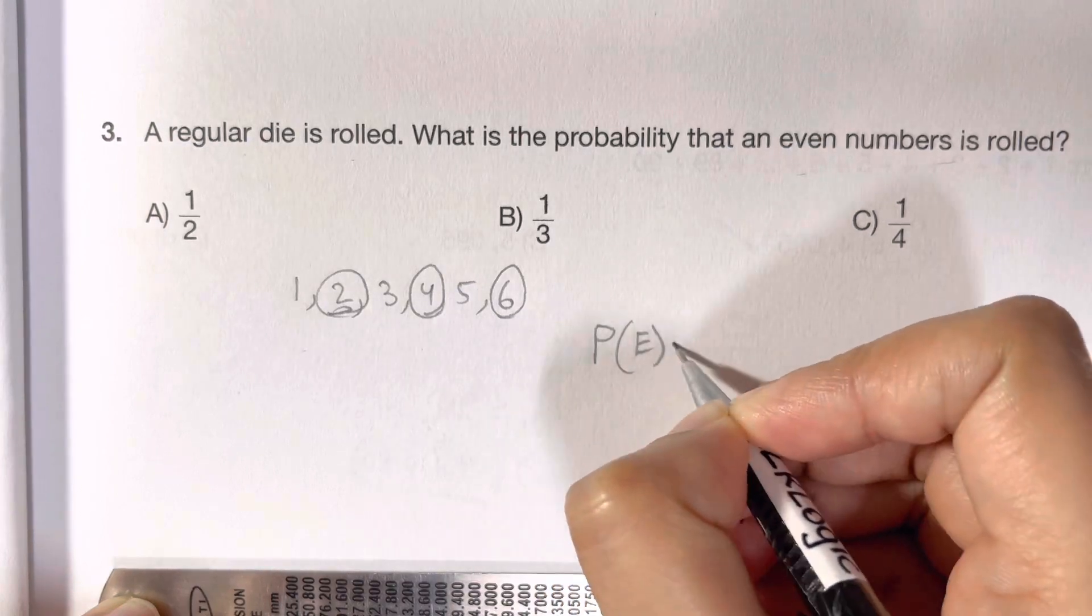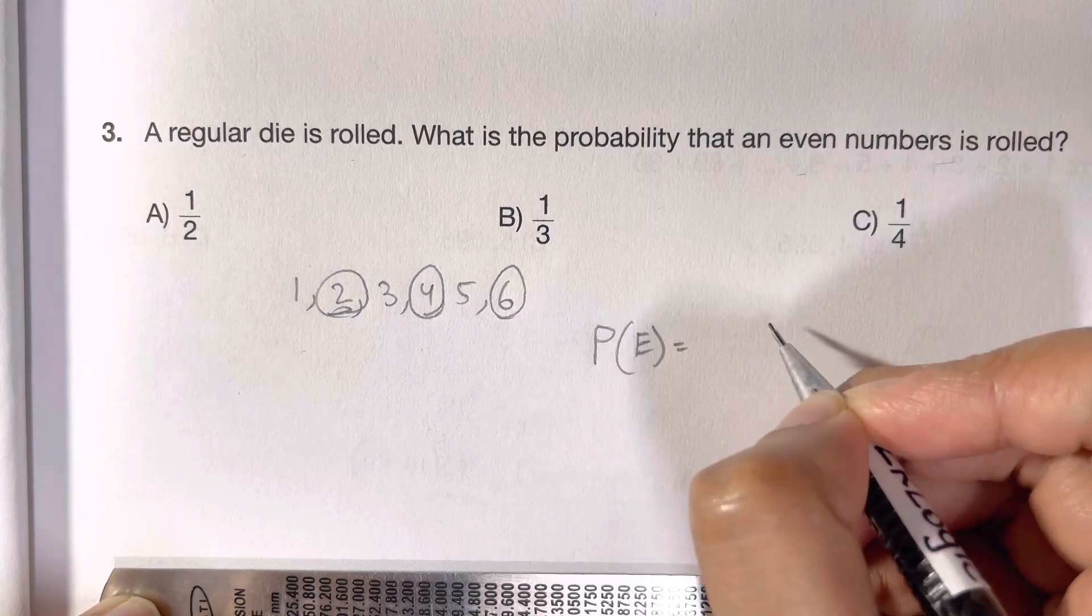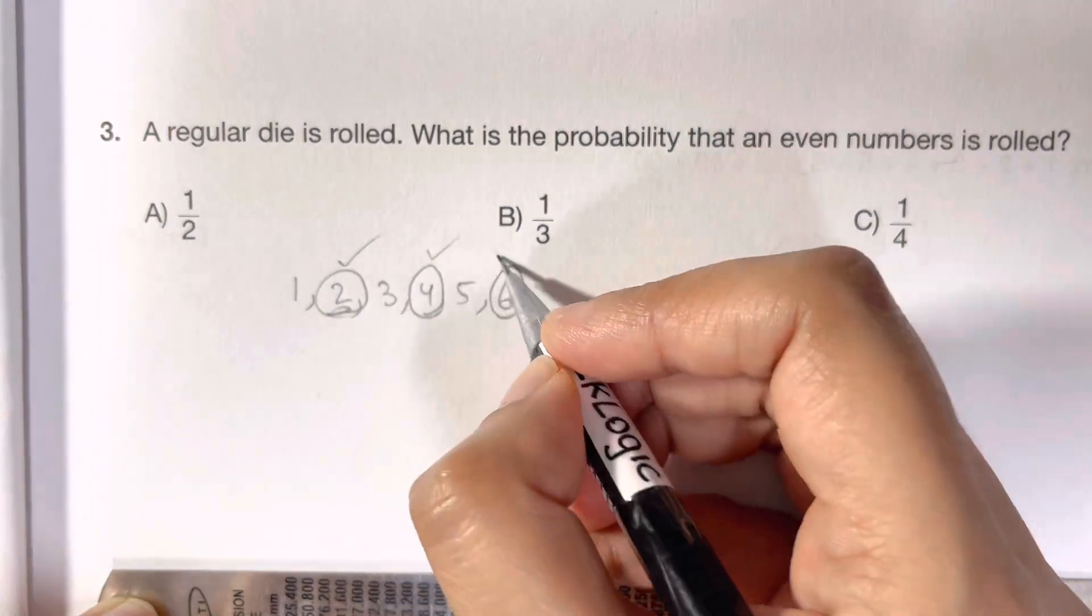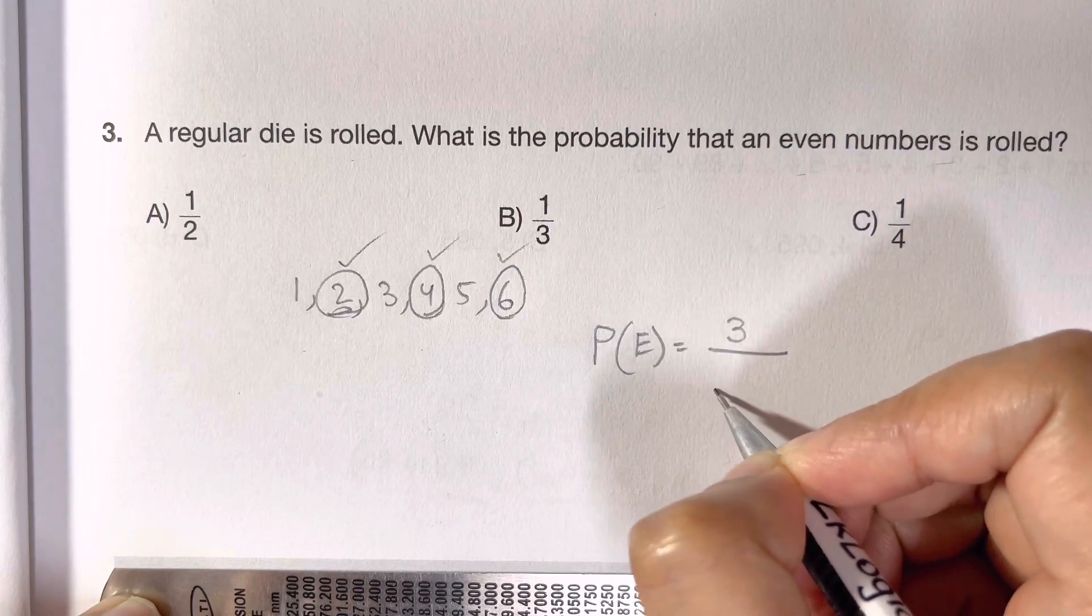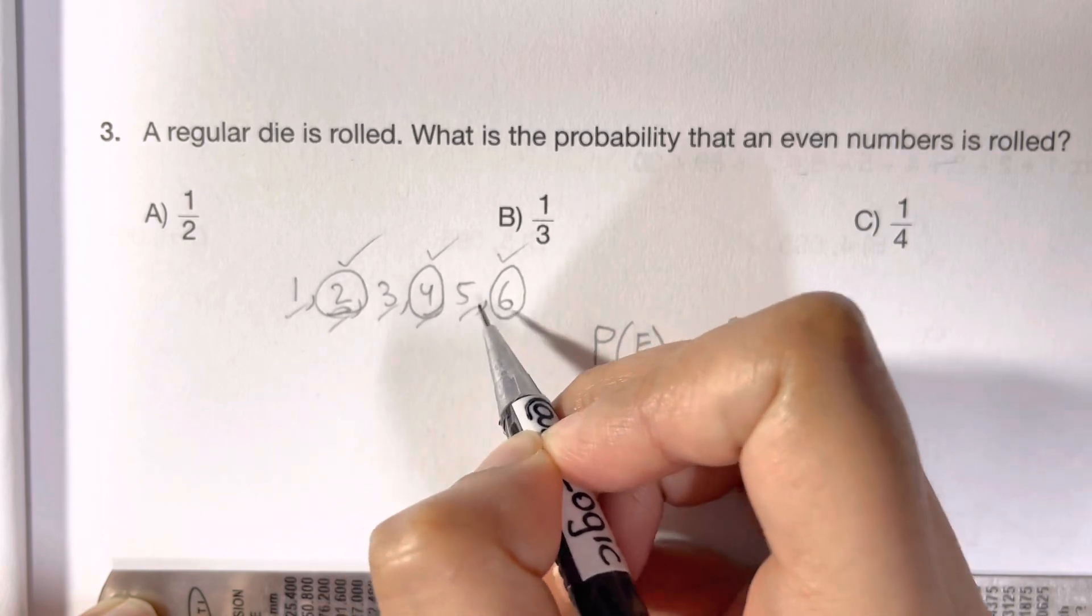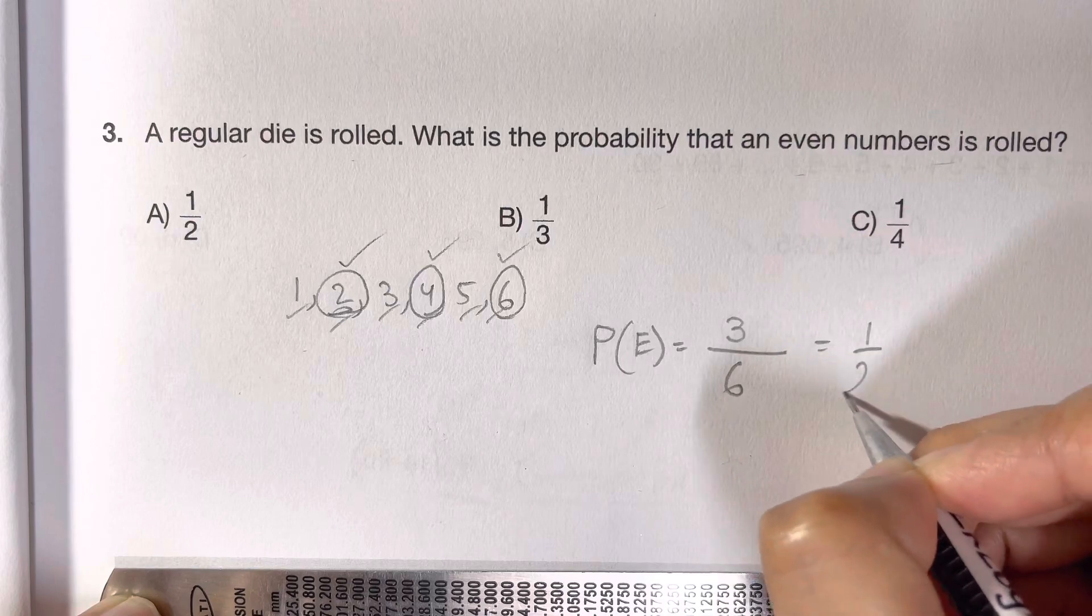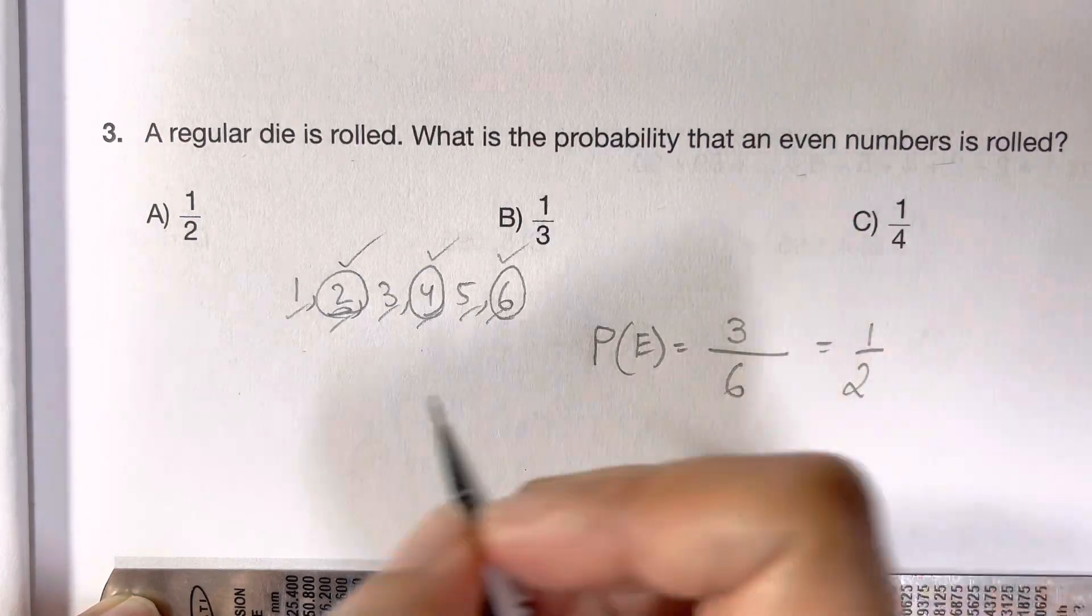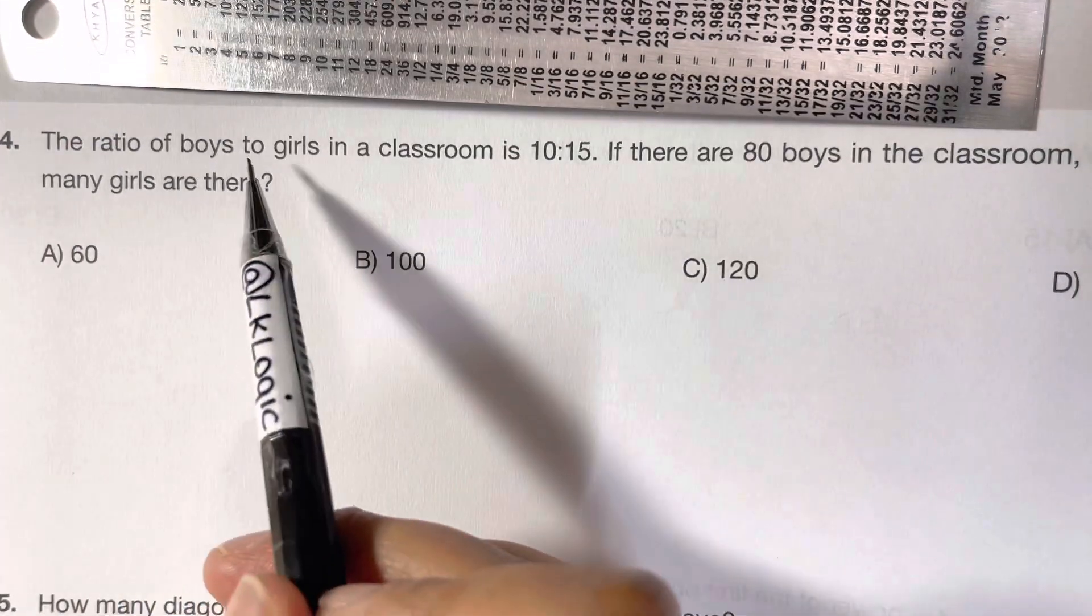The probability is given as probability of rolling an even number equals number of possible outcomes. How many possible outcomes are there? 1, 2, and 3—three possible outcomes out of total outcomes. How many total are there? 1, 2, 3, 4, 5, 6—six total outcomes. Three out of 6, and that's equal to 1 over 2. That's your answer, choice A.